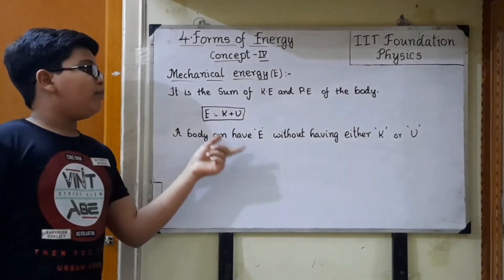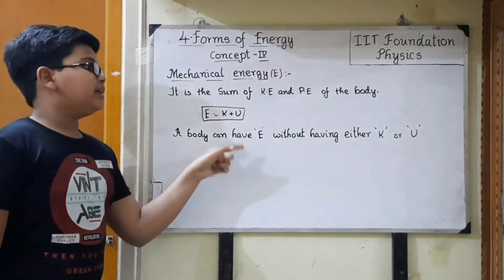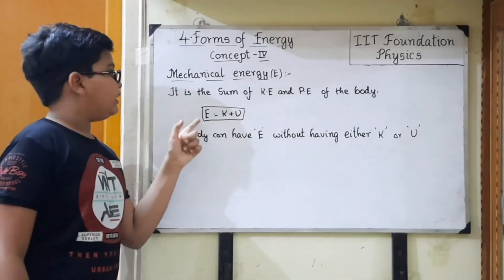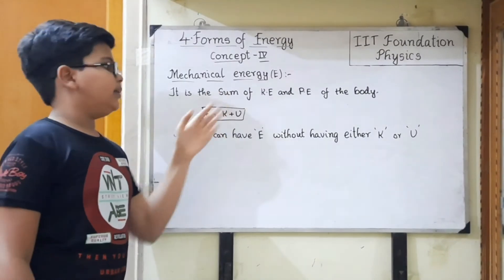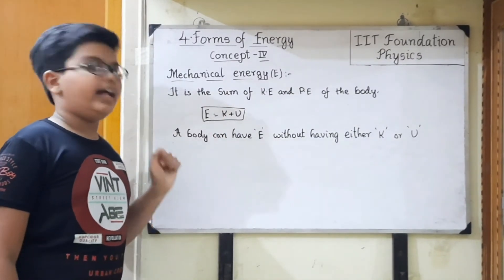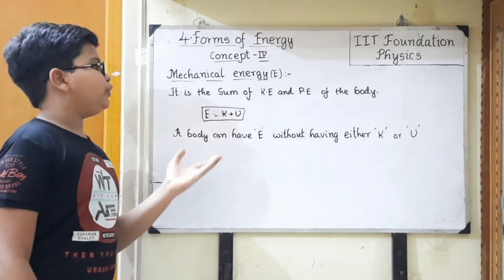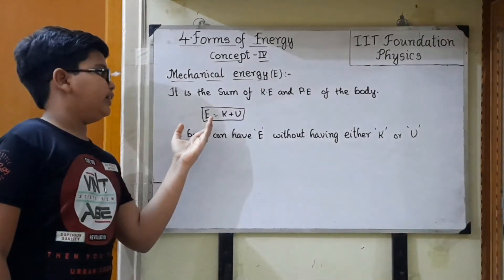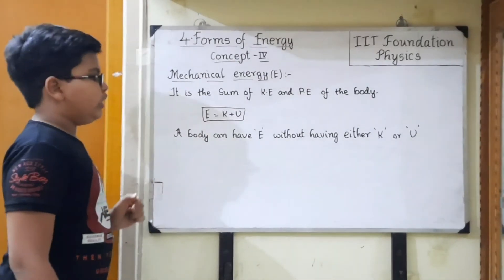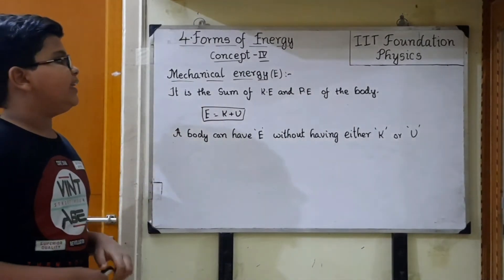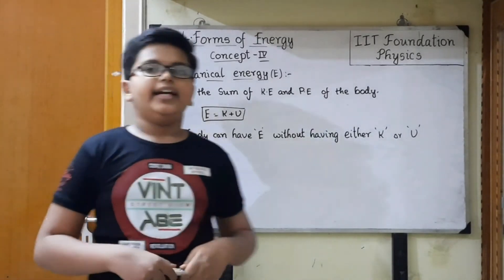If the body does not have kinetic energy but has potential energy, then the mechanical energy will be equal to the potential energy. We substitute 0 for K, so it becomes E equals U. This is about mechanical energy, and this is about concept 4.